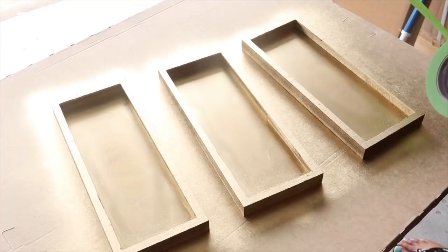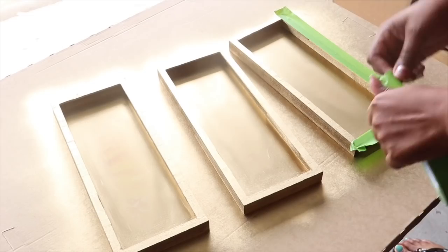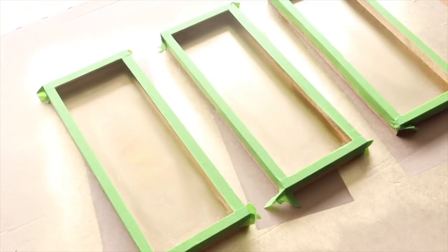Once the paint dried, I covered the front of the frames with painter's tape, and I'm using frog tape. Then I painted the inside of it with a black paint.